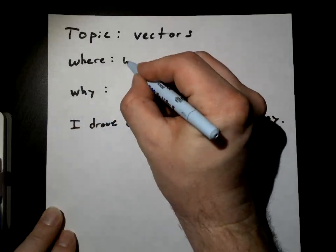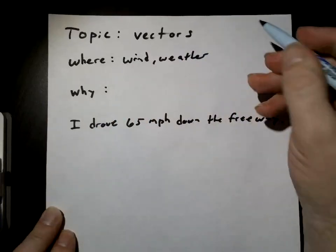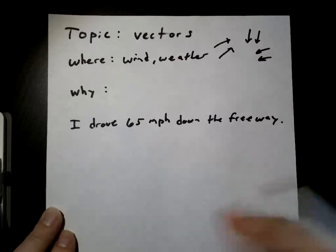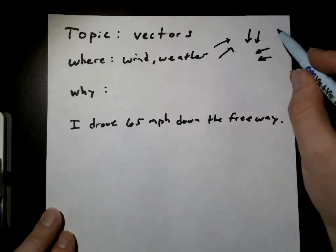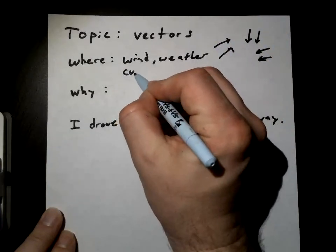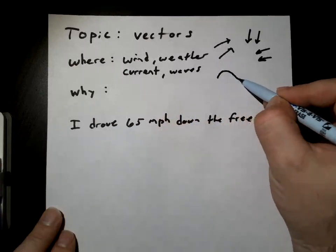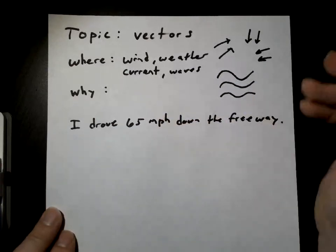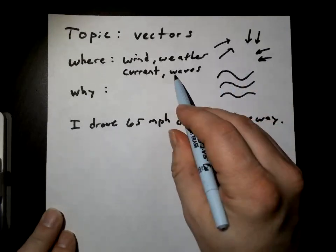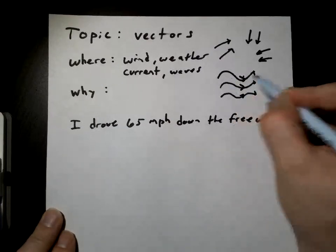Where are vectors found? Well, if you ever look at the wind associated with weather, you see these wind currents going this way or that way. What's the strength of that wind? Think also of currents or waves — ocean waves have a current. You can draw arrows onto these to represent the direction they're going.